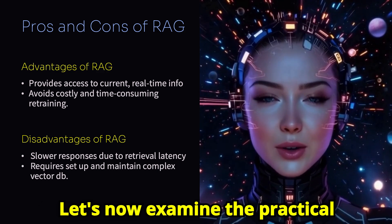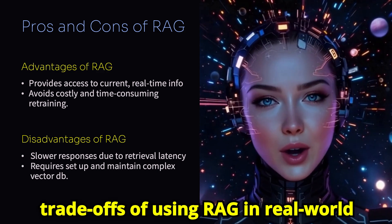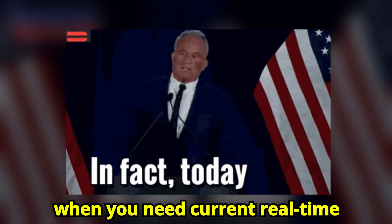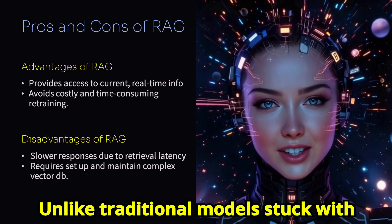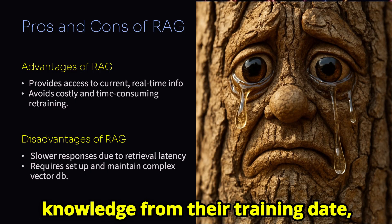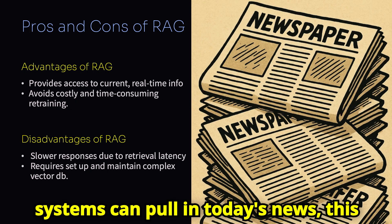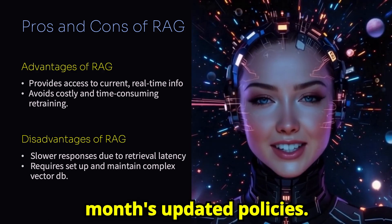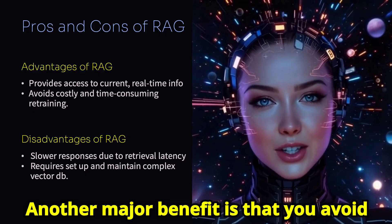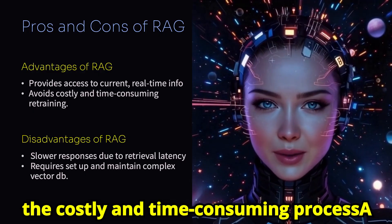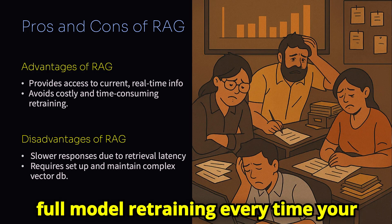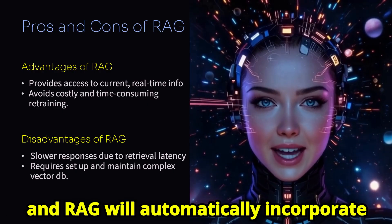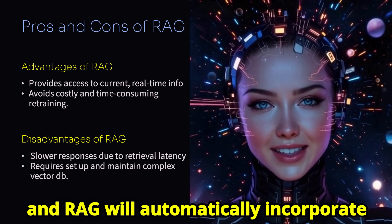Let's now examine the practical trade-offs of using RAG in real-world applications. On the advantages side, RAG truly shines when you need current, real-time information. Unlike traditional models stuck with knowledge from their training dates, RAG-powered systems can pull in today's news, this quarter's financial reports, or this month's updated policies. Another major benefit is that you avoid the costly and time-consuming process of full model retraining every time your data changes. You can simply update your knowledge base, and RAG will automatically incorporate the latest information.